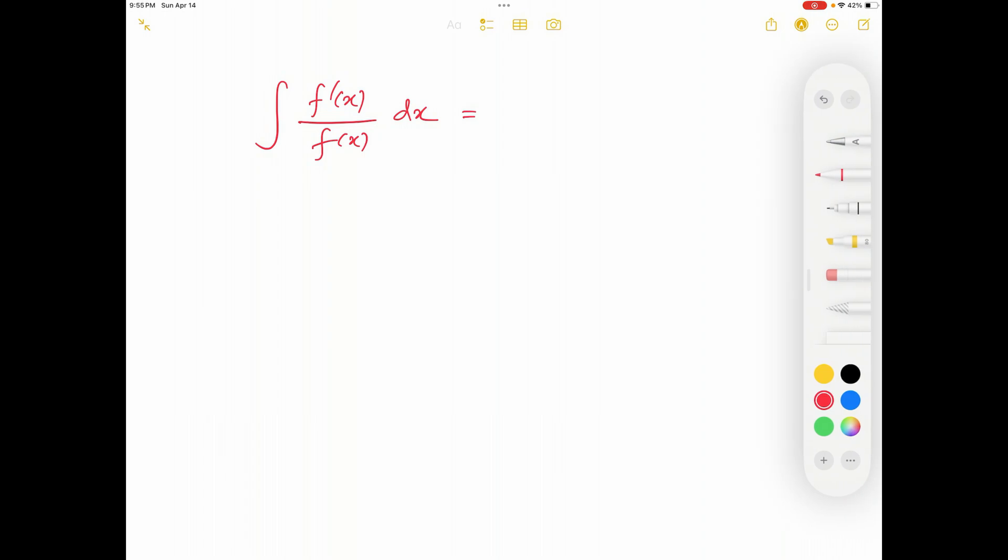In this case, the answer is equal to ln, the natural logarithm of absolute f(x), and of course there will be a plus C.